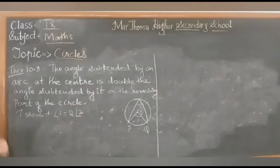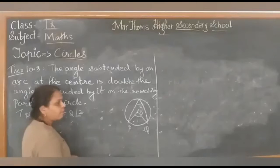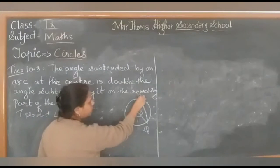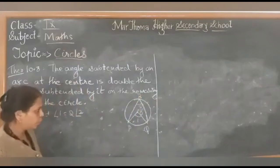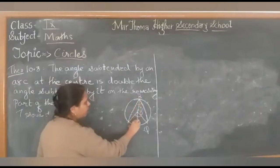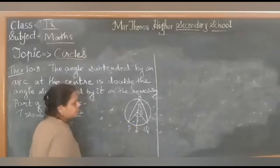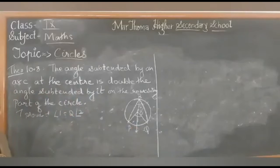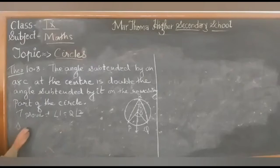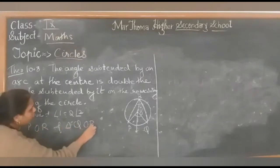How can we start? First, we need to do the construction. If this is point R, we will draw a line from here like this. Now I have two triangles: the first triangle is POR and the second triangle is QOR.